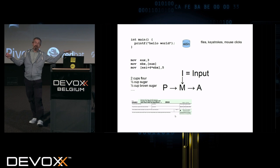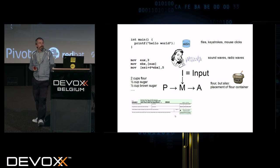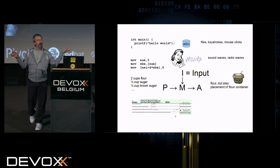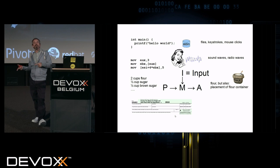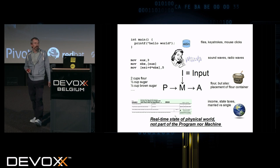In my little model of the world here, the machine's going to take this pile of instructions and change the physical world and produce an answer for me. It's also going to take an input. And in the first case, inputs might be things like files and keystrokes and mouse clicks. It might be physical reality sound waves and radio waves. The microphone is taking sound waves and getting some signal out. The input is the real-time state of the physical world. It's not part of the program, it's not part of the machine. We write the program, but the input is something we react to.